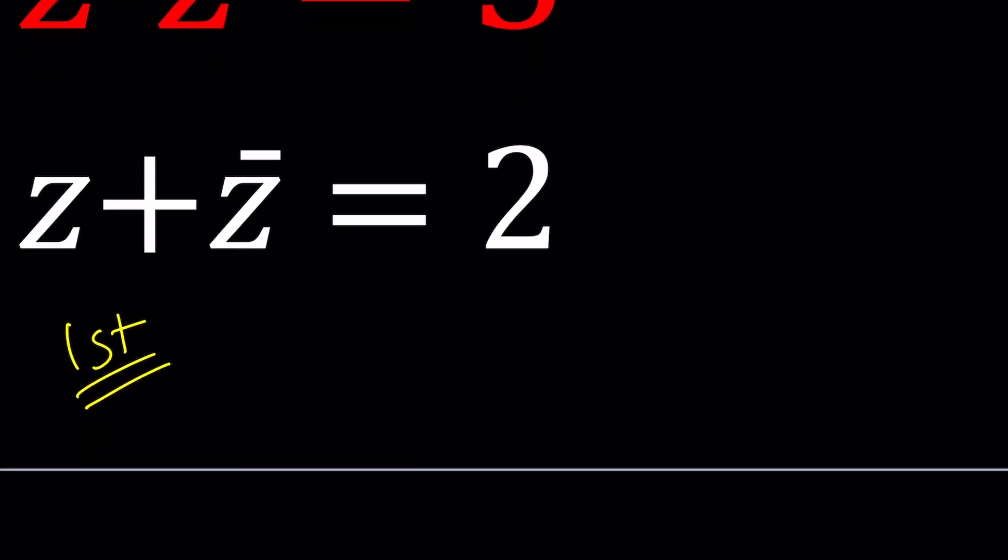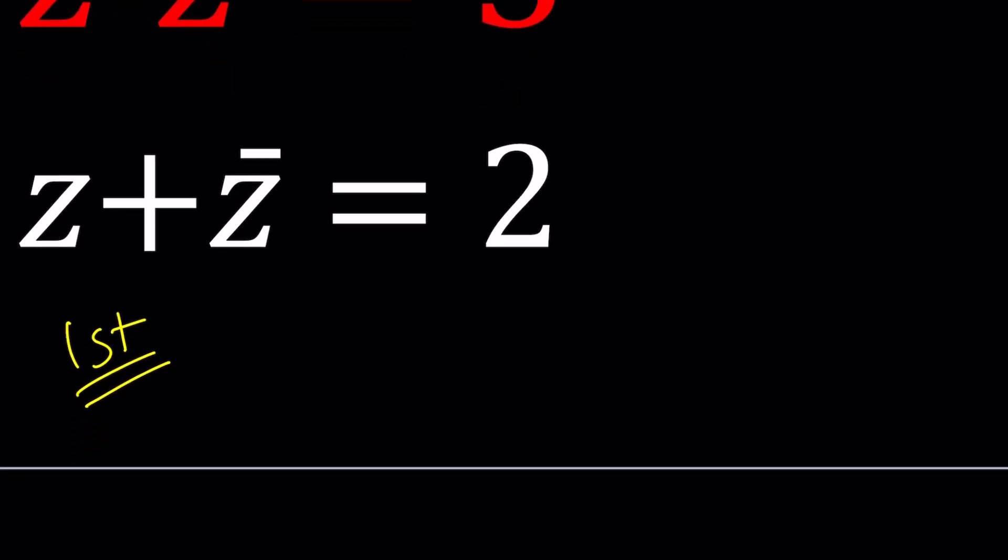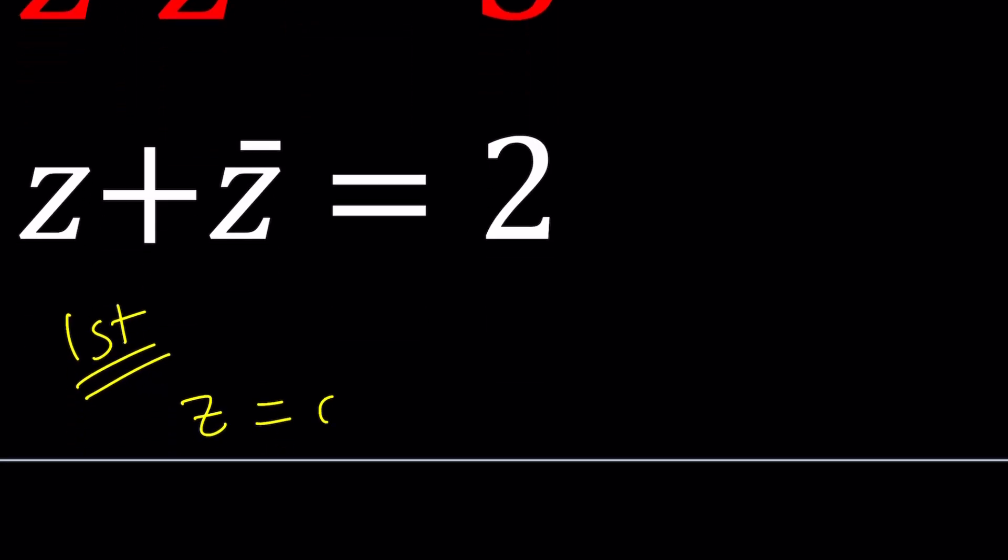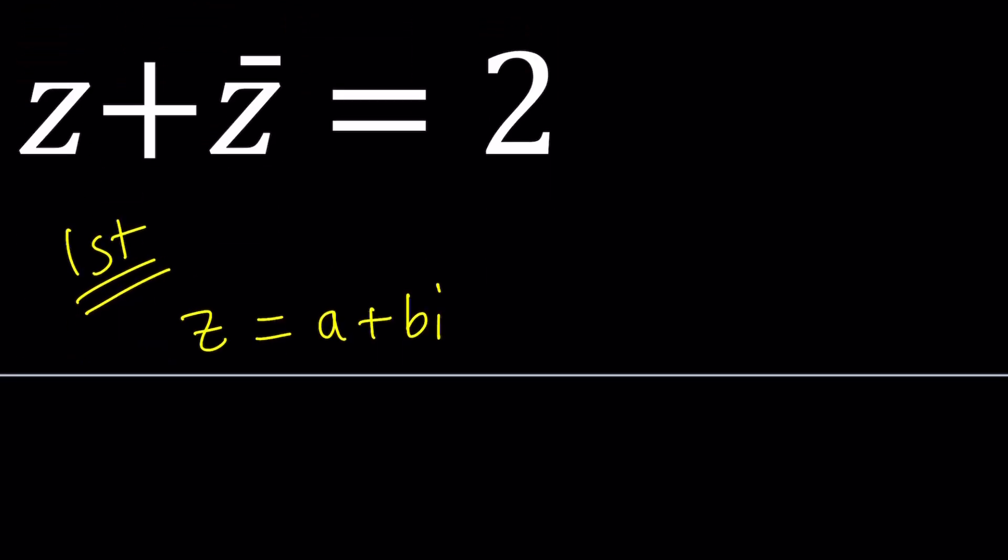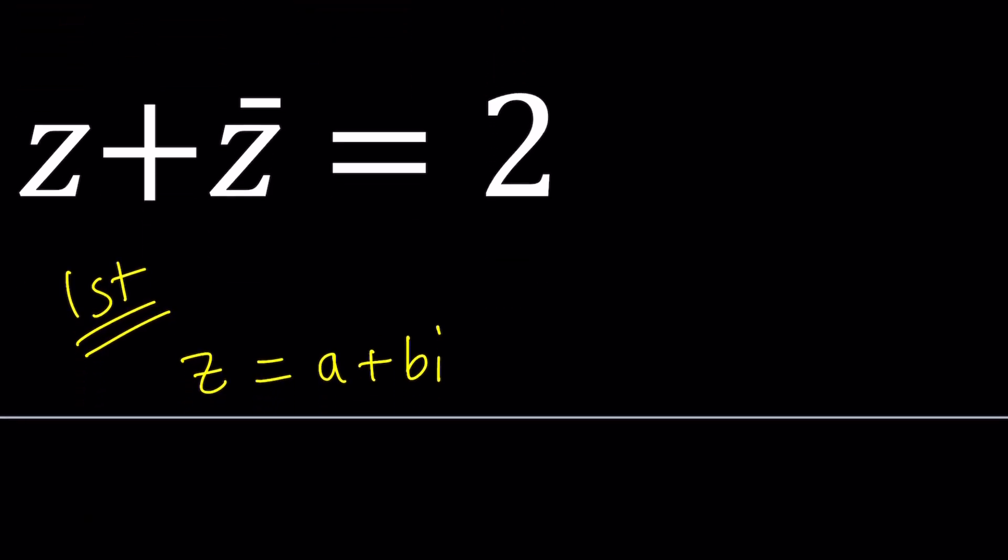For my first method, even though it looks a little bit painful, I think for generality it's good to know these things. Since Z is a complex number I'm going to call it A plus B I. Does that look familiar? So what is Z bar if Z is equal to A plus B I? Z bar is the conjugate which is A minus B I.